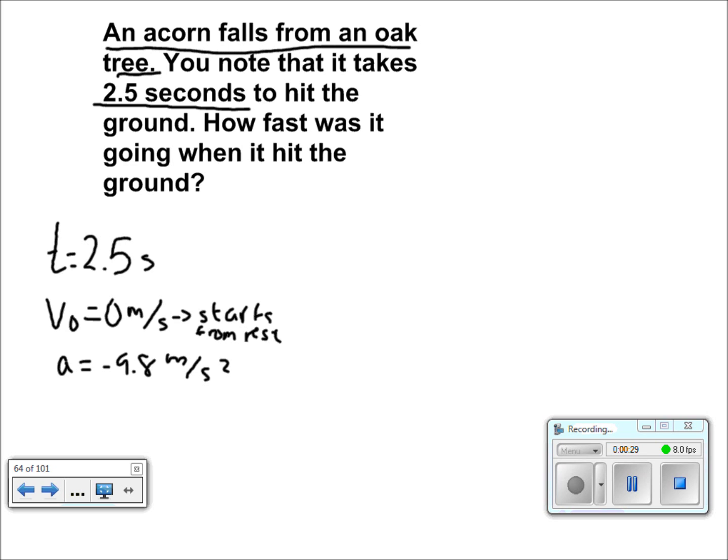The problem asks for how fast the acorn is going when it hits the ground. So we are looking for v. So we set up our equation, v is equal to v naught plus a t.